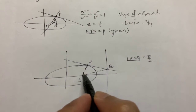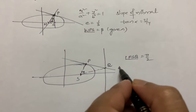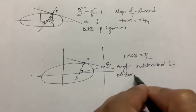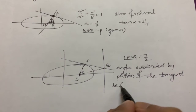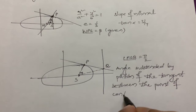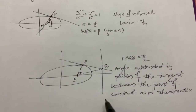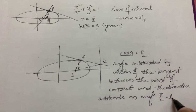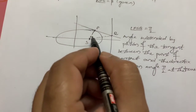This is the property we use: the portion of the tangent between the point of contact and the directrix subtends an angle of π/2 at the focus. So this angle is 90°.